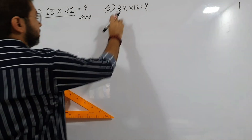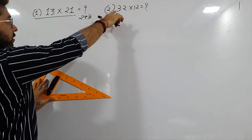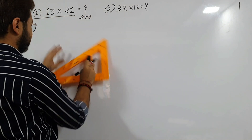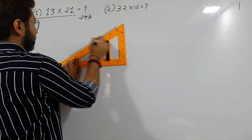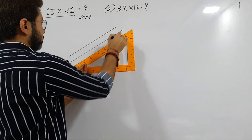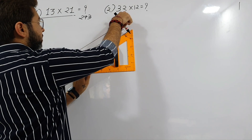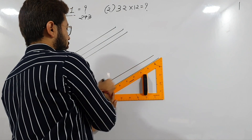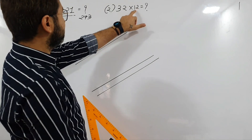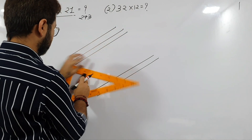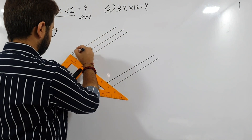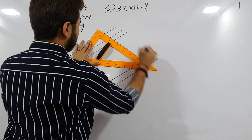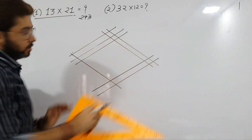The first digit is 3, so draw three lines: one, two, and three. The second digit is 2, so after giving some space, draw two lines. The third digit is 1, so draw one line, and the last digit is 2 so draw two lines again.